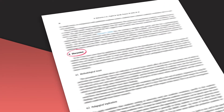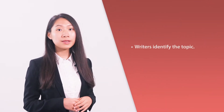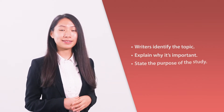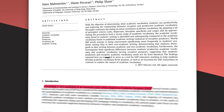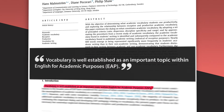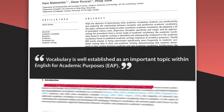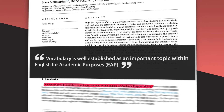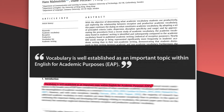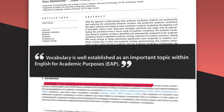Let's get started with the introduction. The introduction tells readers the things they need to know to make sense of the article. To do this, writers identify the topic, explain why it's important, and state the purpose of the study. This article tells us what the broad topic is right at the beginning: 'Vocabulary is well established as an important topic within English for Academic Purposes, or EAP.' And why is this an important topic? The introduction gives us several reasons.